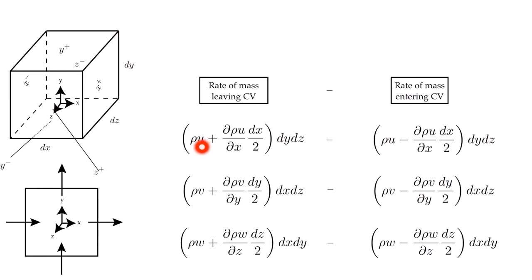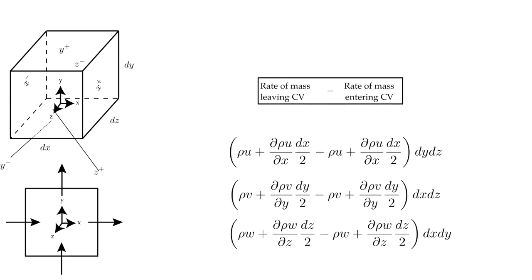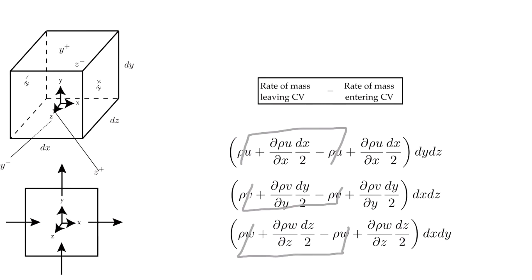You'll notice that I have a rho u term here and a minus rho u term here. I also have a plus rate of change of rho u times dx/2, and a minus of the negative rate of change of rho u times dx/2. These two terms are going to combine, and the halves will add up to a full rate of change of rho u with respect to x. When we simplify, the rho u and minus rho u cancel out. Similarly for the y and z directions. Notice that the area in the x direction — the x-plus face and x-minus face — is dy dz, whereas the rate of change is in the x direction.